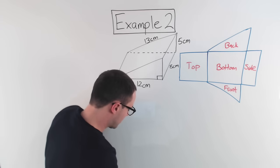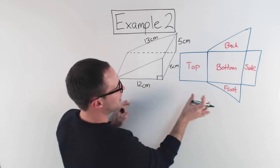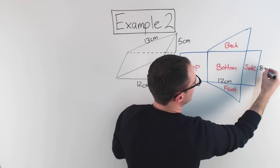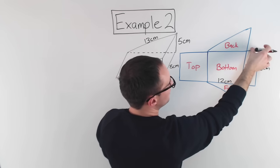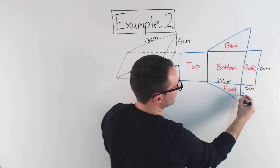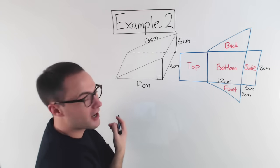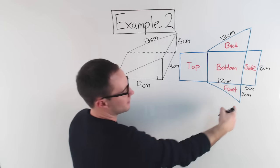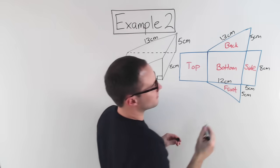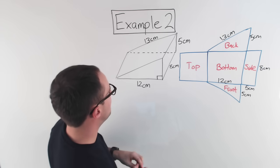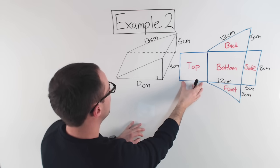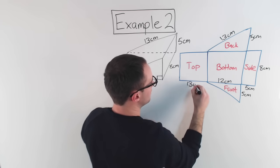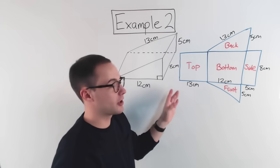Now let's add our lengths. 12 centimeters here, eight centimeters on this side, eight centimeters, five centimeters is the height here — five centimeters, it's also here even though it doesn't look like it in my net. 13 centimeters along there. That's also five centimeters, and five centimeters. The top has eight there, and this length here is also 13 centimeters.